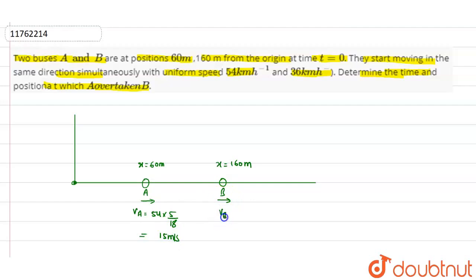And VB is here. It is 36, so 36 into 5 by 18. If you multiply 5 by 18, then it will come out to be 10 meters per second.